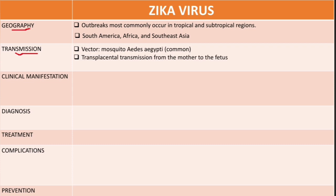The Zika virus can also be transmitted via the placenta — it can cross the placenta like other TORCH infections, including Toxoplasma gondii, Treponema pallidum (the causative agent of syphilis), and Parvovirus B19. Another route is sexual transmission: the Zika virus can be transmitted from men to women, as it can persist in the testicles.